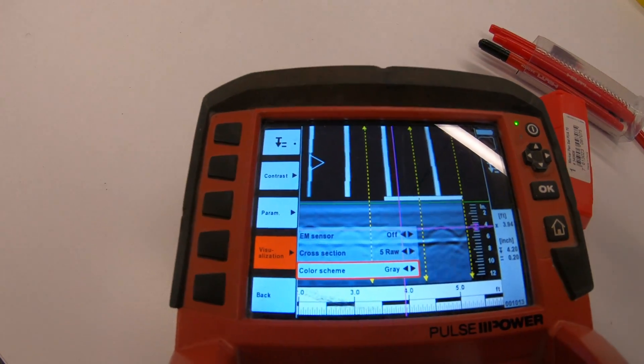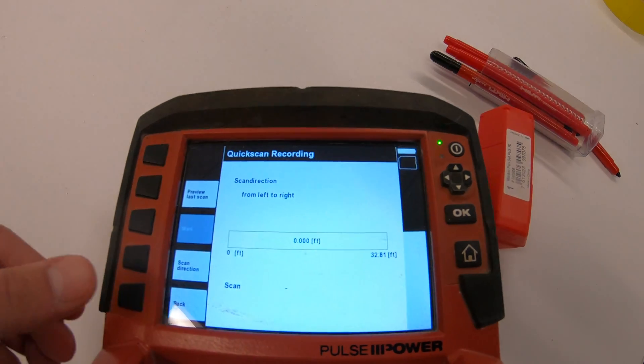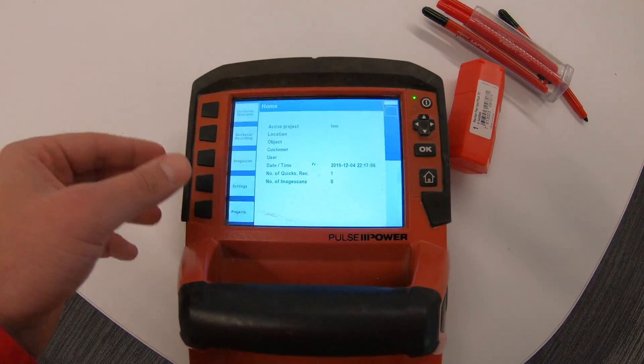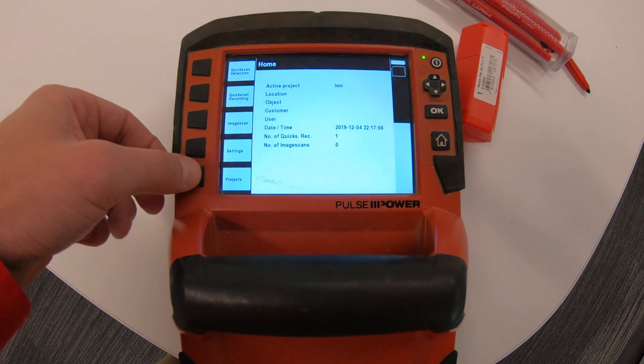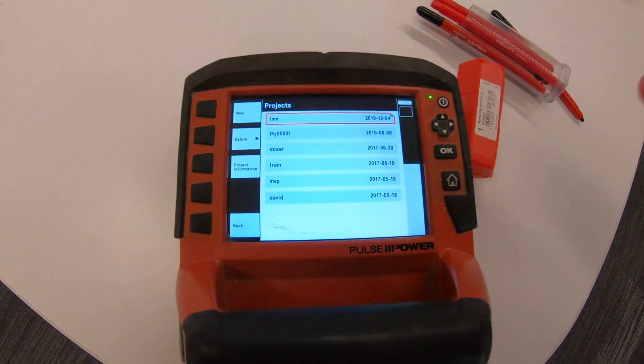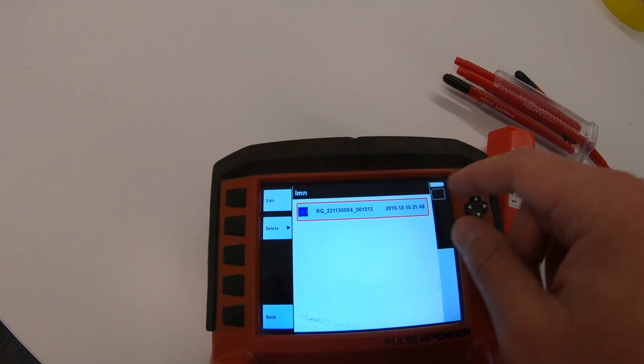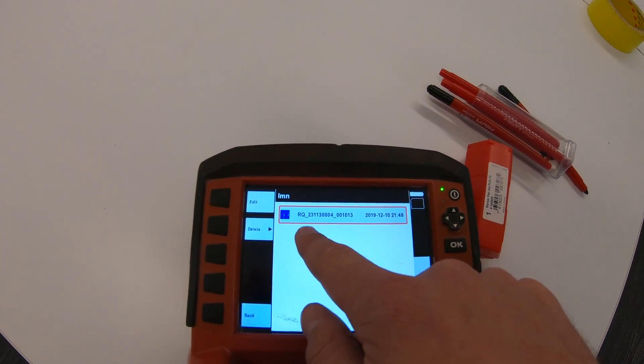Right, so that's just the way that you can now save the scan. Now let me show you where I save this. So remember I recorded it, so this is now saved onto my unit. So I'll go to projects, and here's LMN—that's the active project I know I saved it on. I'll say okay, and there it is. RQ—Q stands for the quick scan—with a long number. Maybe I'll edit that and call this...